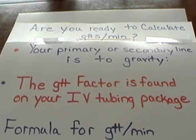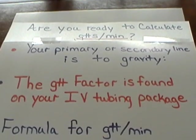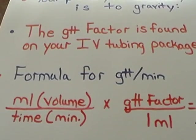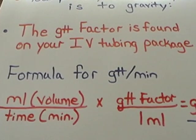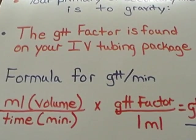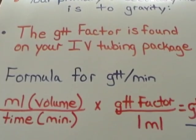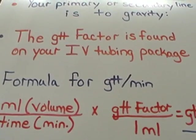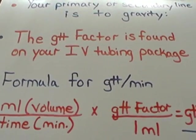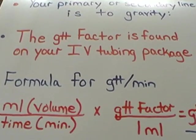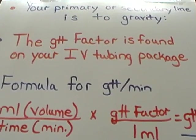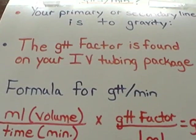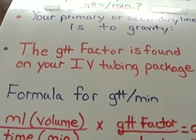Where would you find the drop factor? The drop factor is found on your IV tubing package. If your primary or secondary line tubing is already in the patient's room and you don't have the package, go to the supply room on that floor and get a package of unopened primary or secondary tubing. Verify that it's the same and look on the package for the drop factor. Make sure you have the correct tubing — if calculating for a primary or main line, use that package for your drop factor.